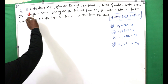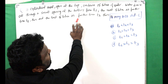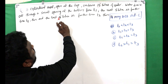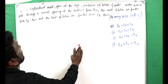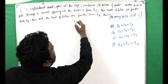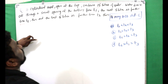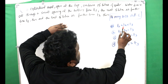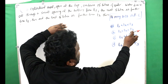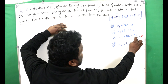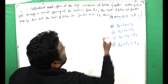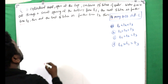The next question: a cylindrical vessel open at the top contains 15 liters of water. Water drains out through a small opening at the bottom — the first 5 liters drain in time t1, the next 5 liters in time t2, and the last 5 liters in time t3. The options are: t1 < t2 < t3, t1 > t2 > t3, t1 = t2 = t3, or t2 > t1 = t3.